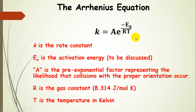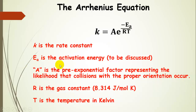The exponential term is e to the negative Ea — the activation energy — divided by R times T. R is the gas constant using the energy form: 8.314 joules per mole Kelvin. T is the temperature in Kelvin, which must be in Kelvin so we don't have negative numbers in the exponential term. Activation energy is the last topic we'll discuss — what it is and how it can be modified.